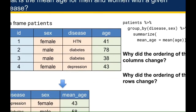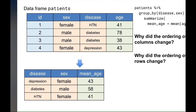Let's look at the ordering of the rows. Hypertension showed up first in the original data frame but appears last in the summarized data frame. This happens because for each grouped variable, values are typically sorted in alphabetical order. R first sorted disease alphabetically from depression down to hypertension, and then within each category it sorts by sex — female would appear before male because F comes before M.